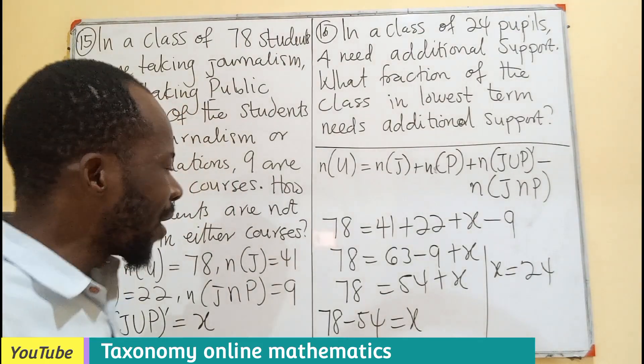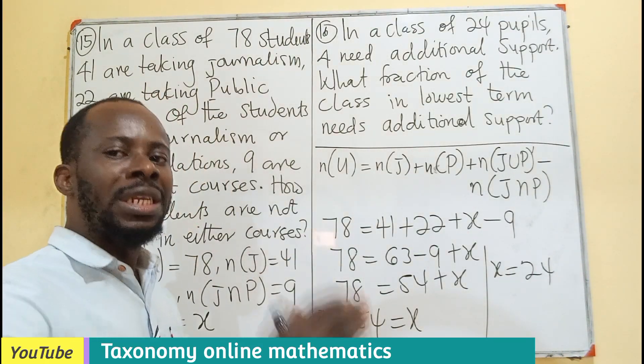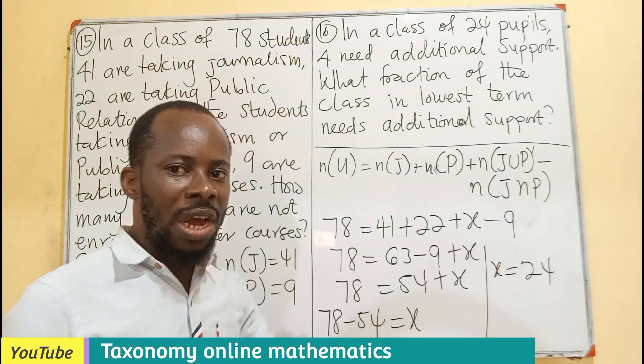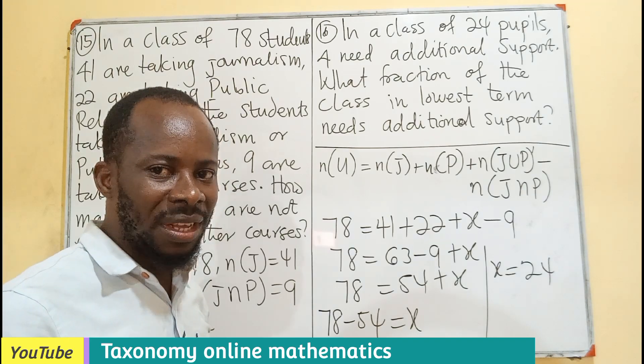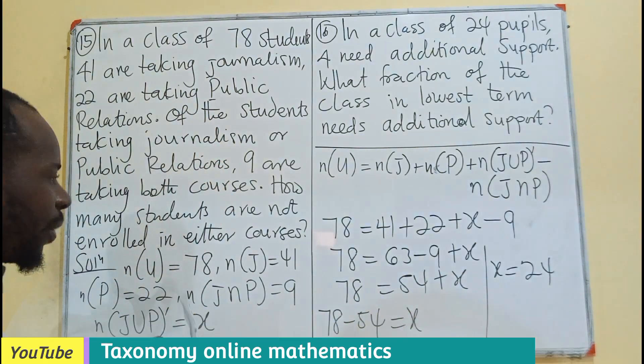In this case, the number of students that are in the class but are not doing journalism and public relations would be 24. You can also try using the Venn diagram to see if you arrive at the same answer using the preamble from here.